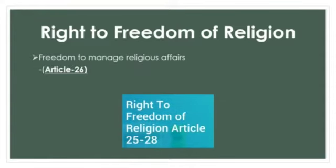Article 26 deals with freedom to manage religious affairs. The article provides that every religious denomination has the following rights, subject to morality, health and public order: the right to form and maintain institutions for religious and charitable purposes; the right to manage its own affairs in the matter of religion; the right to acquire immovable and movable property; and the right to administer such property according to the law.